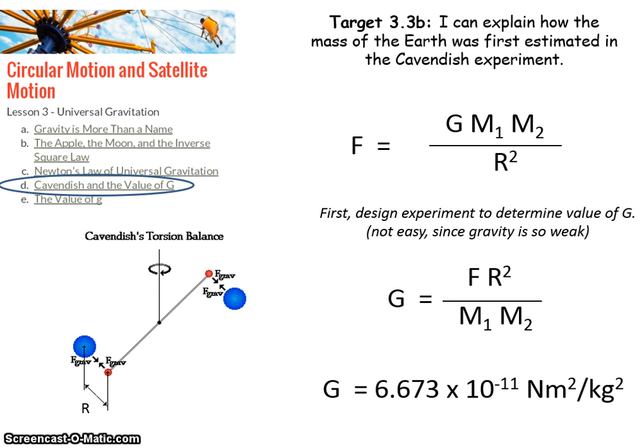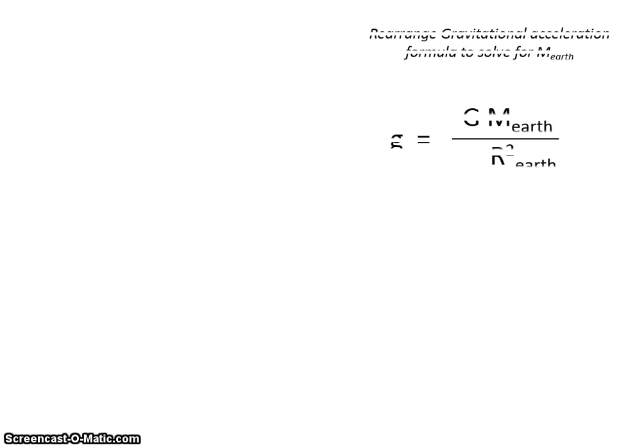What we want to do next is see how he used this to find the mass of the Earth. To find the mass of the Earth is easy now because we can go back to the formula that we derived in the earlier video, the formula that calculates the free-fall acceleration of gravity. Remember that formula? g is equal to big G times the mass of the Earth over the radius of the Earth squared. We now take that formula and rearrange it to solve for the mass of the Earth.